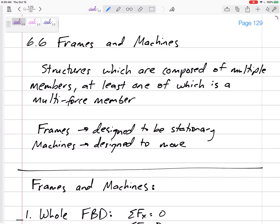So we'll say frames and machines. Frames are designed to be stationary, machines are designed to move. In this class, statics, they're both static. They're not moving, so it really doesn't matter to us. We're grouping frames and machines together.